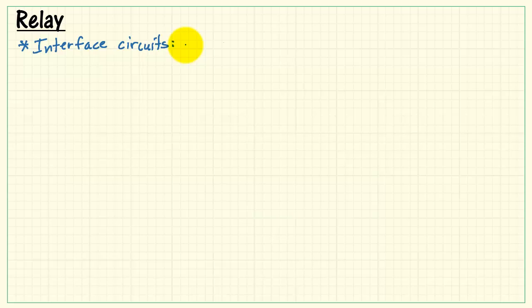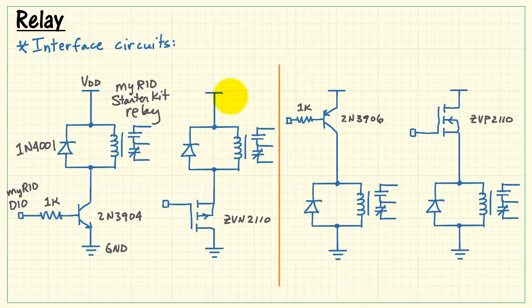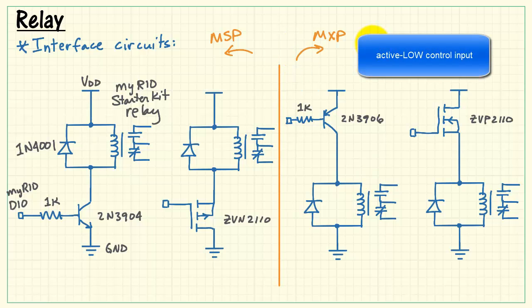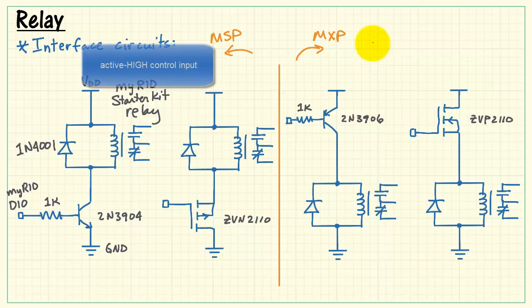Now, with that background information in hand, we can take a look at the details of the interface circuits. I have two sets. Two for the MSP mini-systems port on the MyRio, and the MXP MyRio expansion port. Those are active low, while the MSP versions are active high.